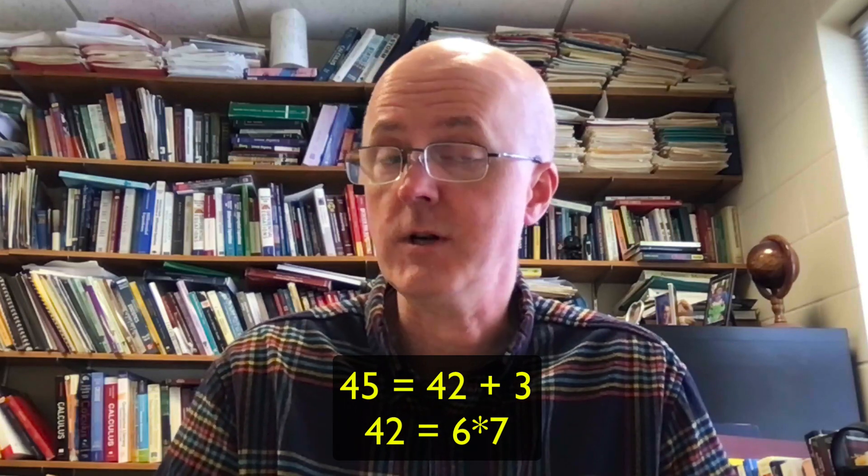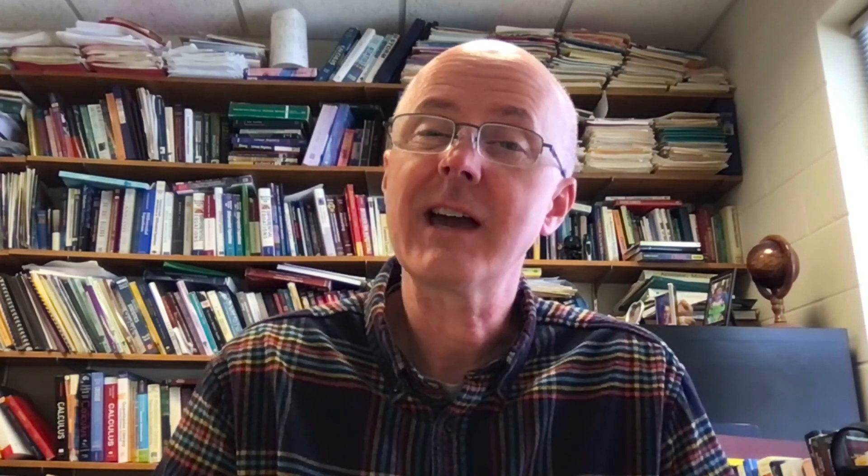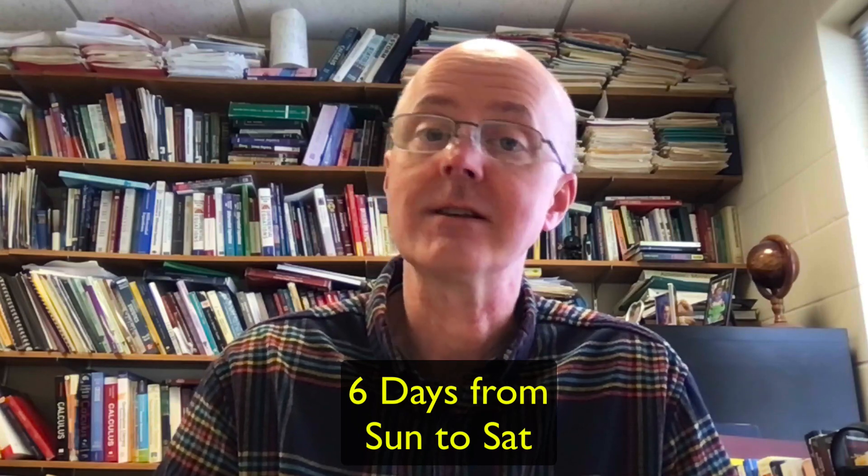This can be done quickly by realizing that 45 is 3 more than 42, a multiple of 7, and 38 is 3 more than 35, another multiple of 7, altogether giving us 3 plus 3, 6. We need to go 6 days forward in the week from Sunday to Saturday.